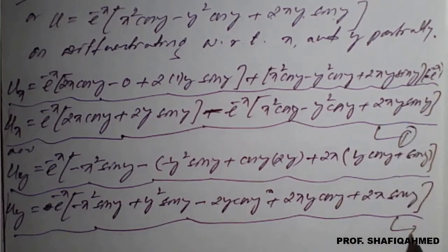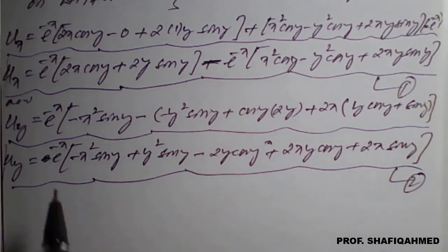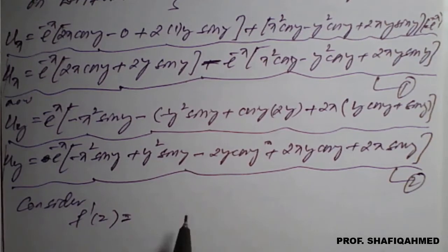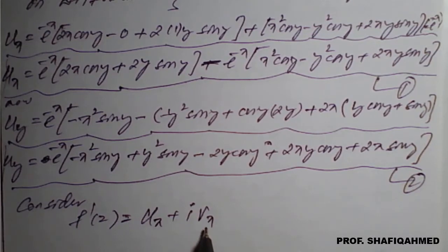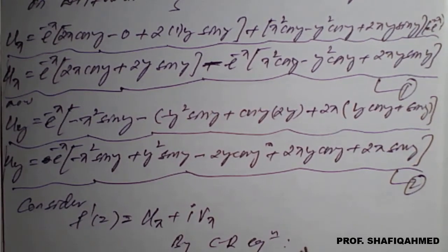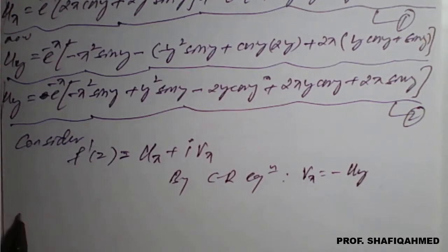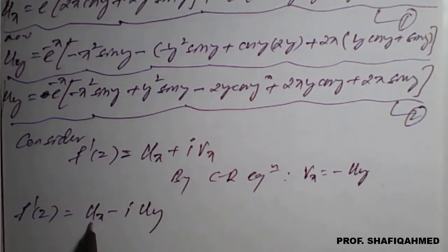I will label u_x as equation 1 and u_y as equation 2. We consider f'(z) = u_x + i·v_x, but we do not know v_x. So we convert v_x in terms of u_y. By the Cauchy-Riemann equation, v_x = −u_y. Therefore f'(z) = u_x − i·u_y.